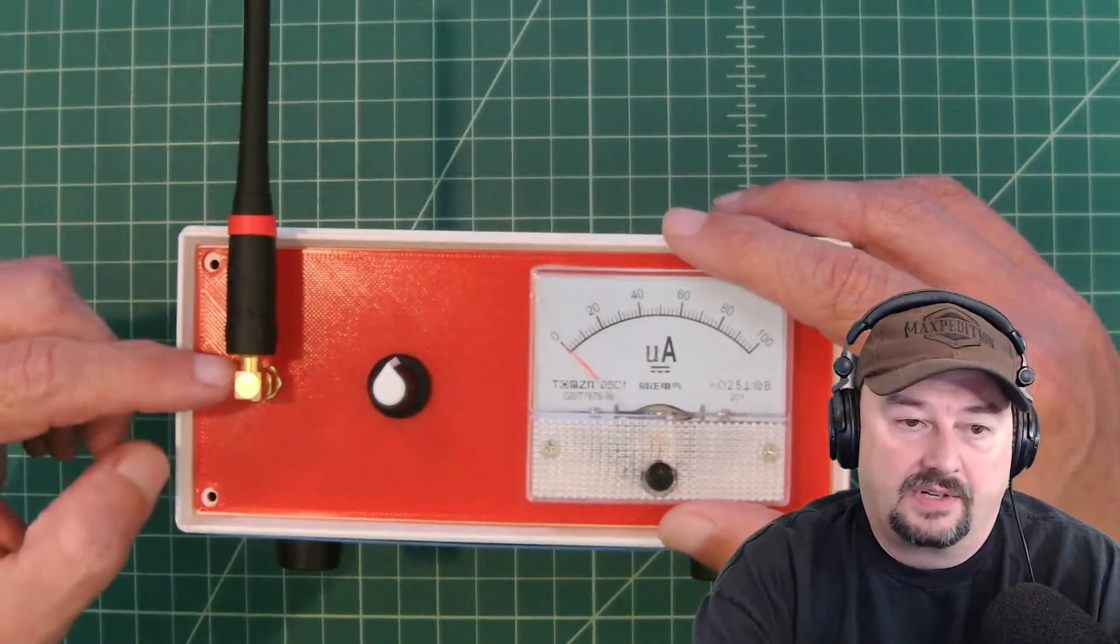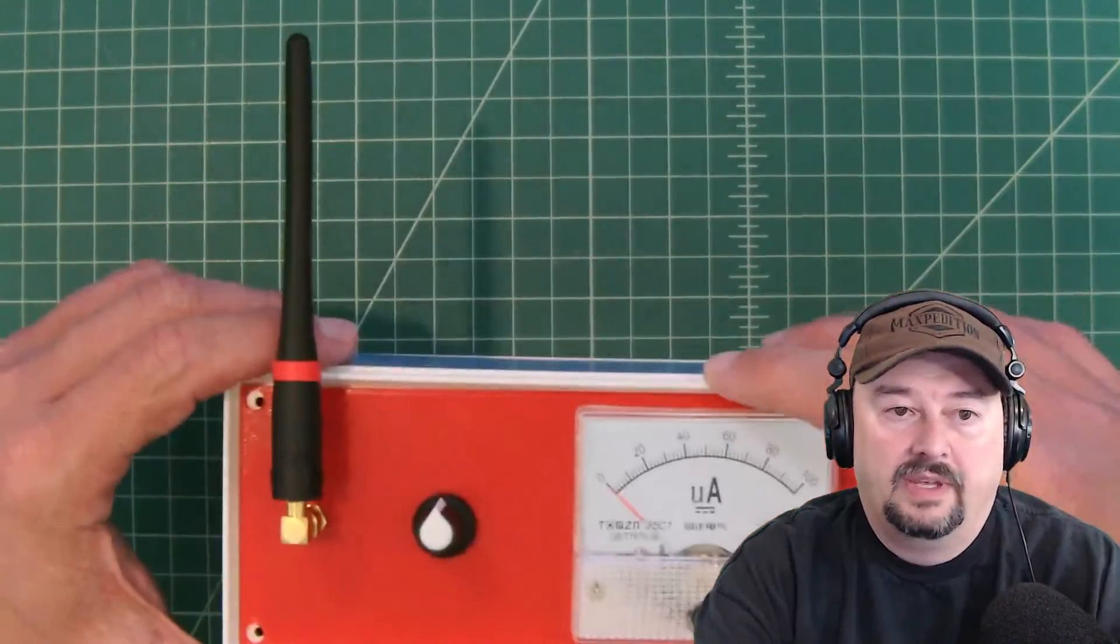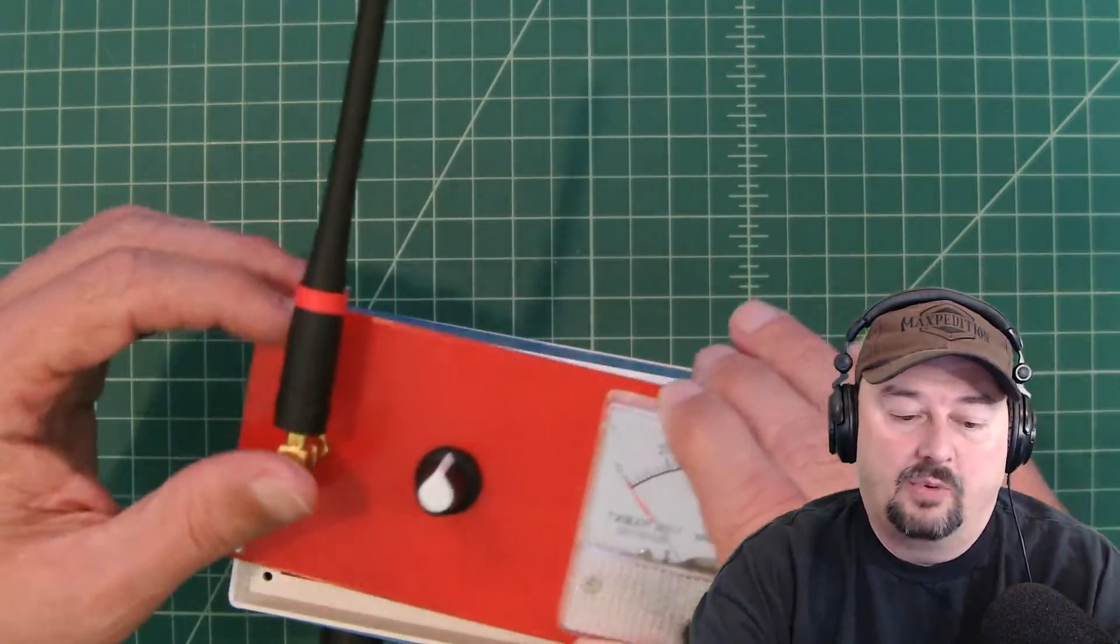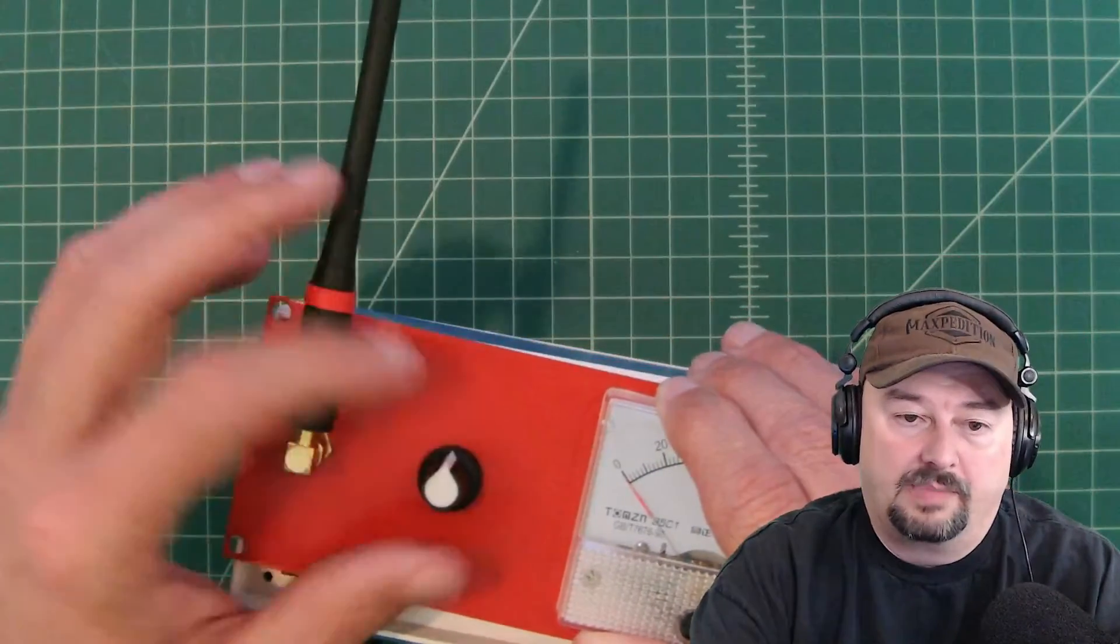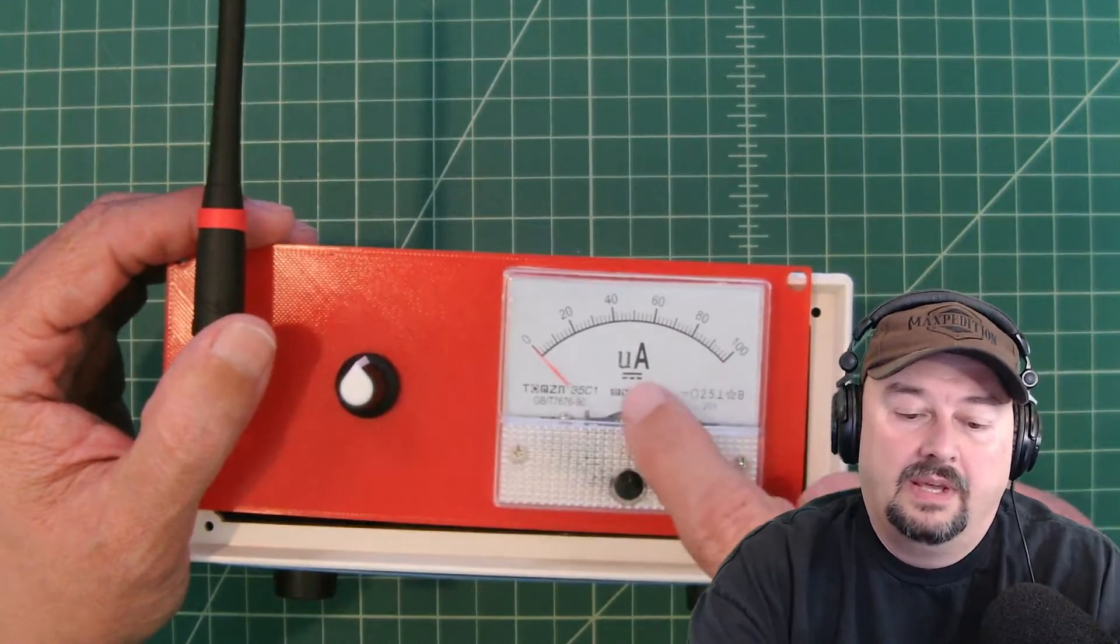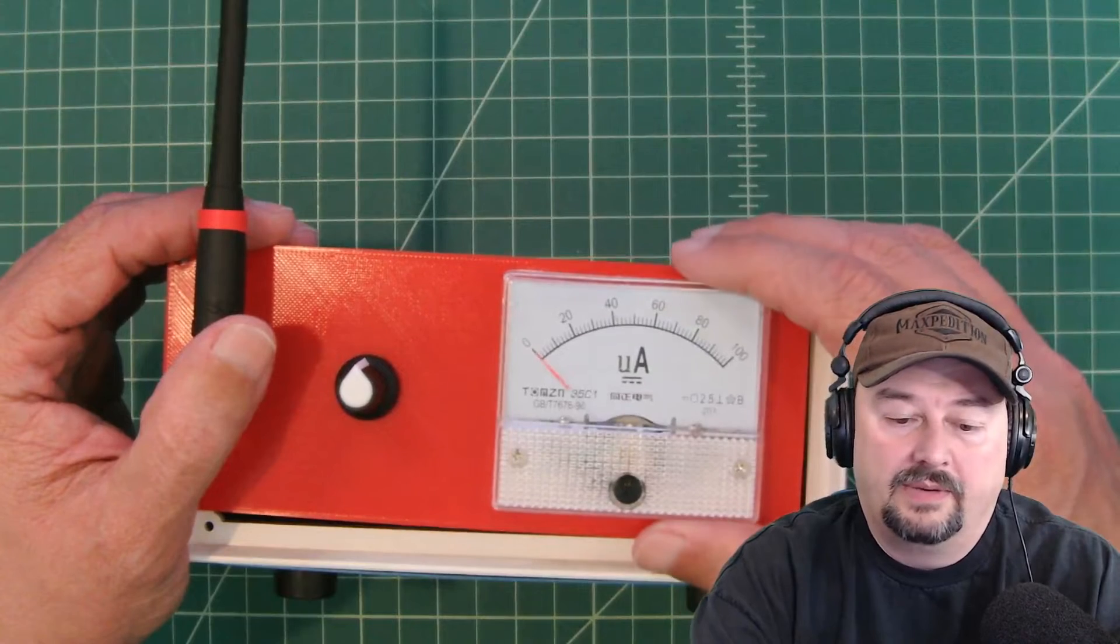Take a look at the panel. Here is our SMA antenna port and it was a straight through and I added a right angle here so I could just have it point up. Here's the knob for the potentiometer to adjust the sensitivity, and then here is our 100 microamp meter.